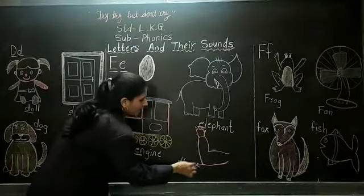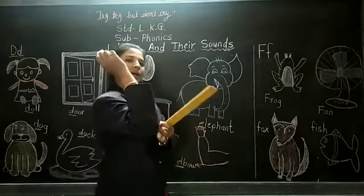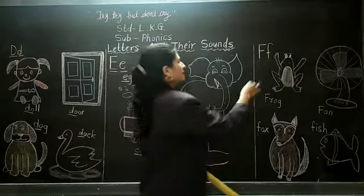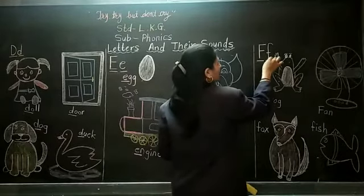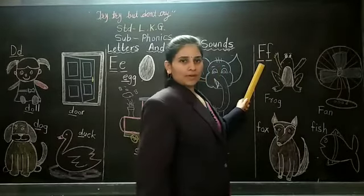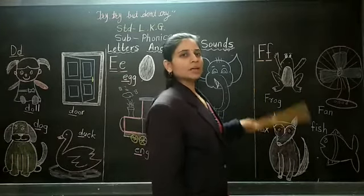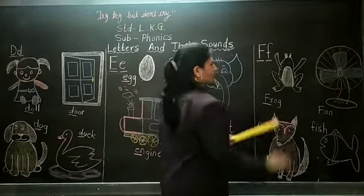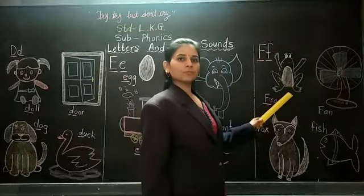Next, eh, eh, elbow. See, this is our elbow. Next, capital letter F, small letter F. The sound of F as fuh. Say after me, fuh, fuh, frog. This is the picture of frog.